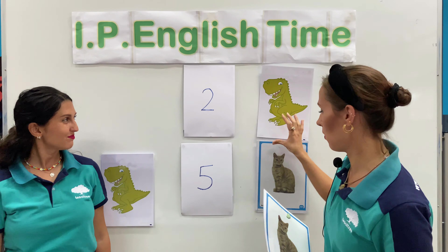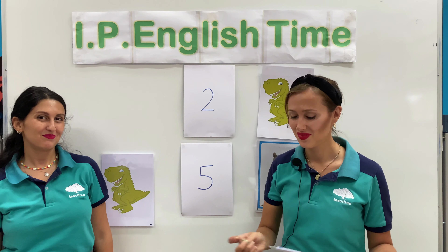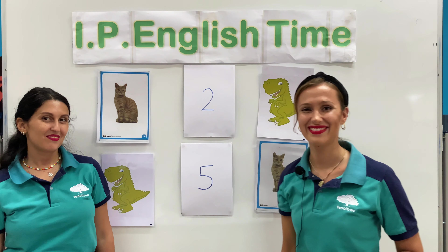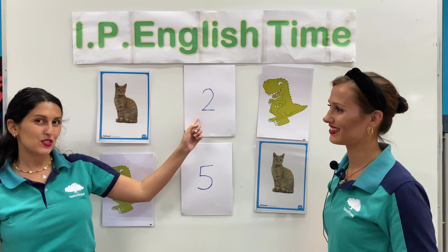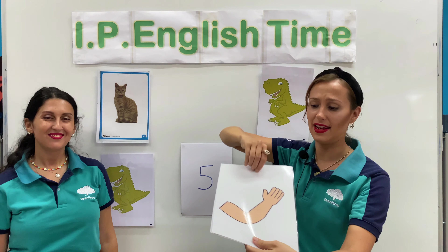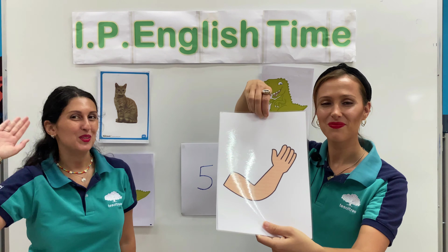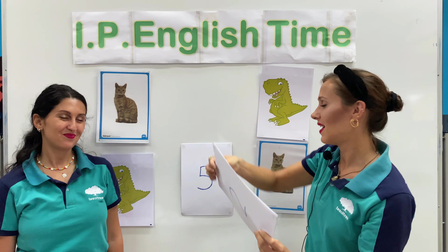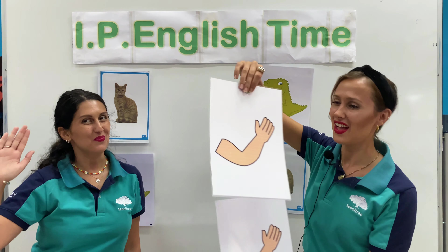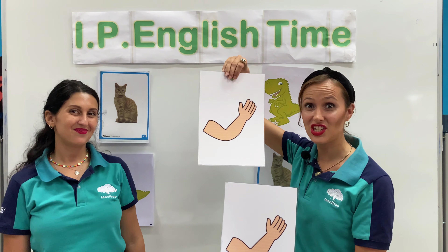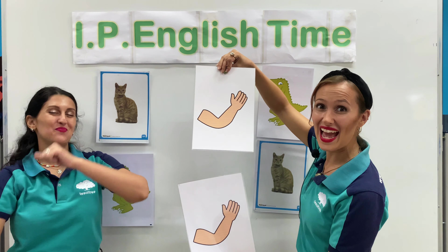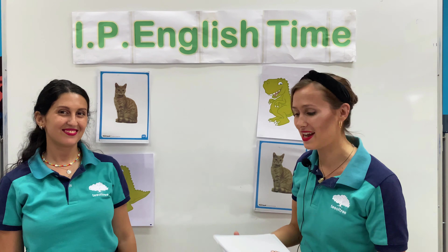Now we have one more match to find. Teacher Val, can you give me the two final numbers, please? Number two and number five. Number two, what is it? Arm. And number five, what is it? Arm. Is this a match, yes or no? Yes! We found all three matches.